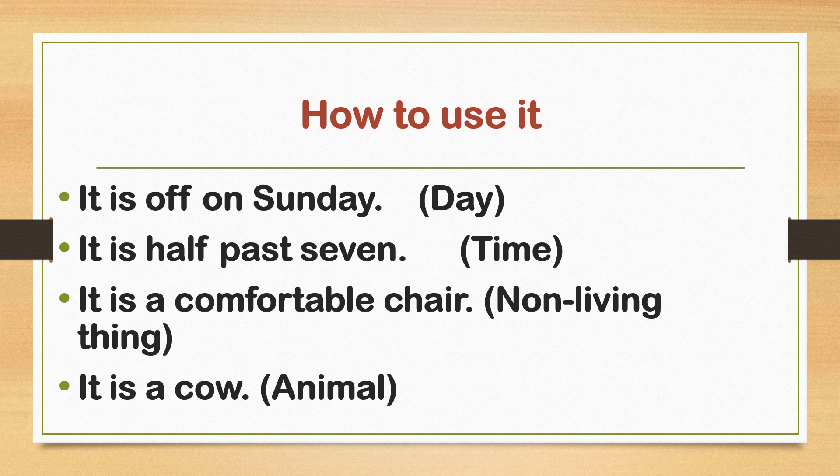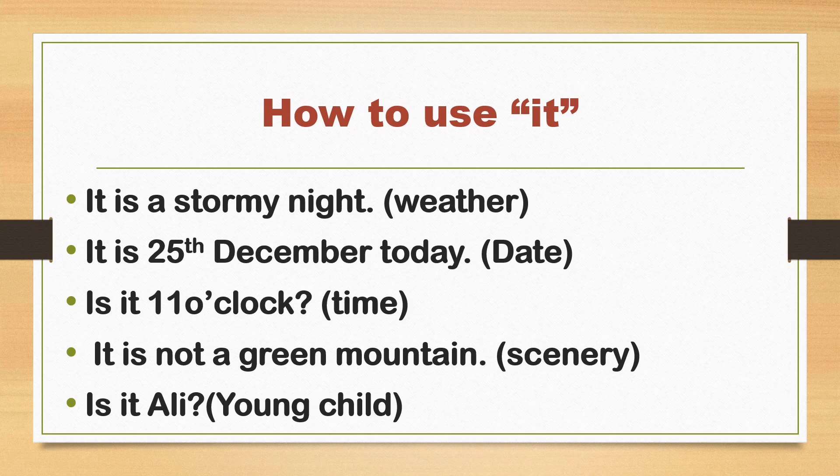'It is a cow.' This is an example of using 'it' for an animal. When we need to refer to an animal, we use 'it'. Similarly: 'It is a dog.' 'It is a cat.'